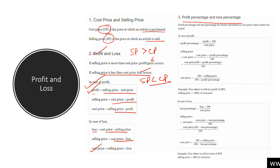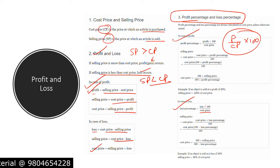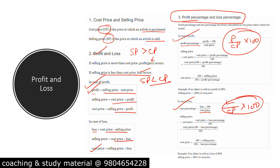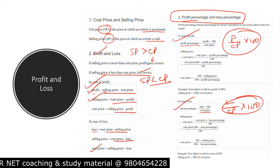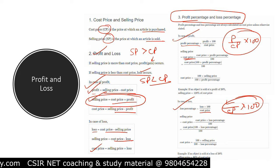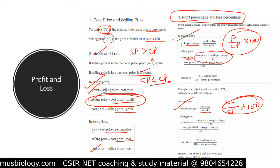For percentage of profit and loss: profit percentage equals profit into 100 divided by cost price. Loss percentage equals loss into 100 divided by cost price. From these percentage values we can calculate the selling price. In case of profit, selling price equals cost price plus profit, where profit equals cost price multiplied by profit percentage divided by 100.